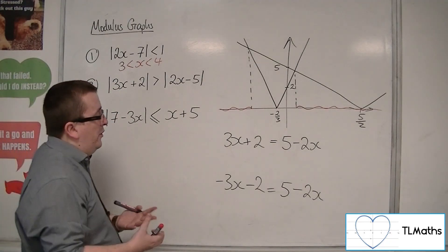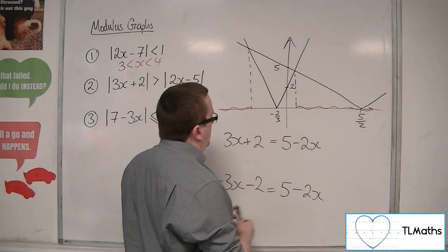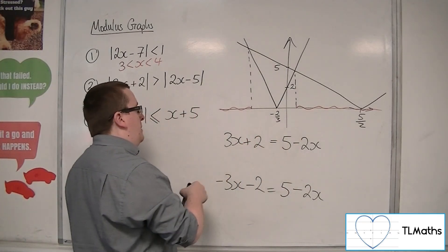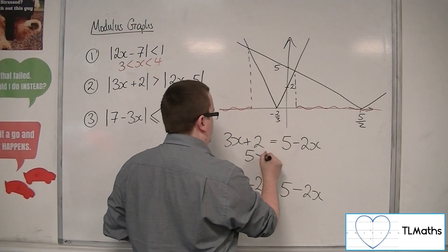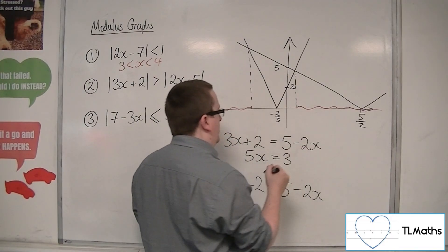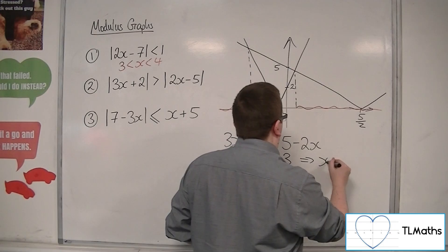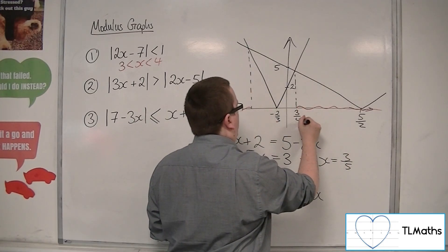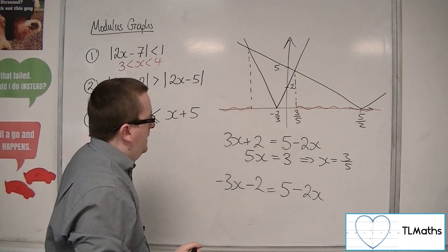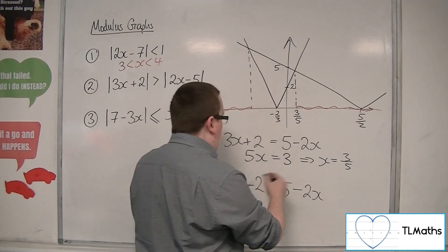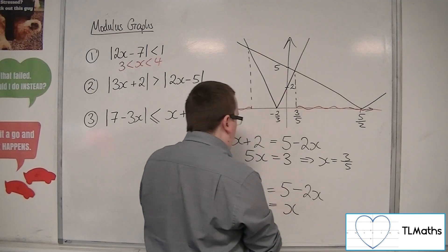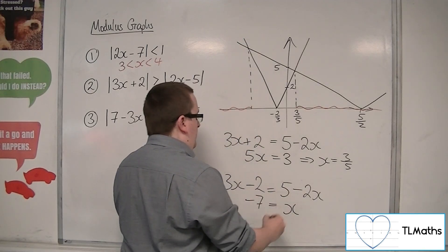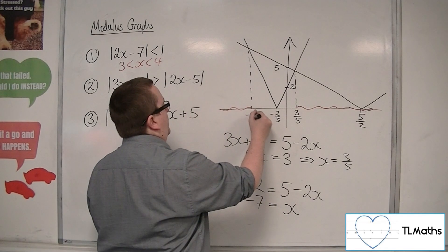So, now I just need to solve both of these equations. So, adding 2x to both sides gets me 5x, and is equal to 3. And so, x must be 3 fifths. So, this must be that value there, so that's 3 fifths. And then doing the same down here, if I add 3x to both sides, I get x. Subtract 5 from both sides, I get minus 7. And so, that must be minus 7.